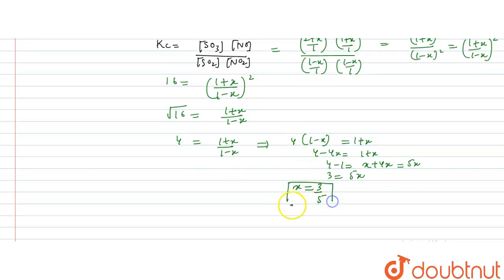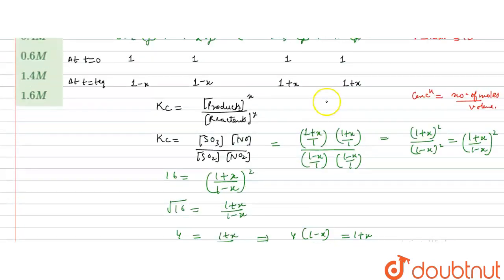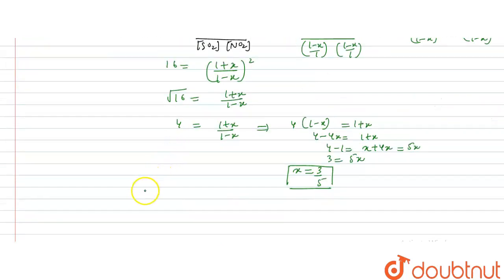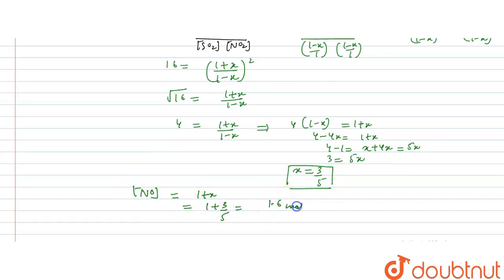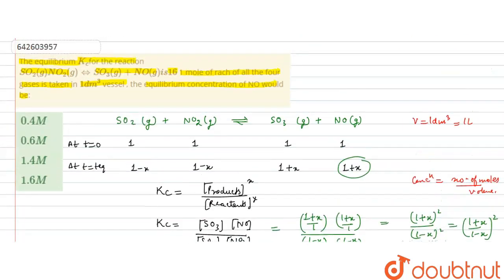We have to find the equilibrium concentration of NO, which is 1 + x. So the concentration of NO = 1 + 3/5 = 1.6 moles per liter. This is the concentration of NO: 1.6 M. So the correct option to this question is option D, 1.6 molar.